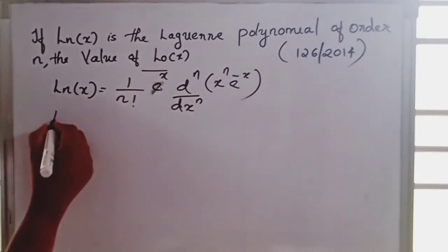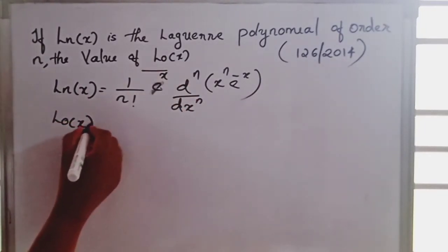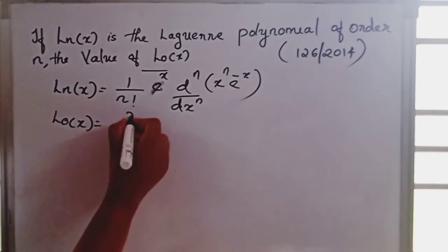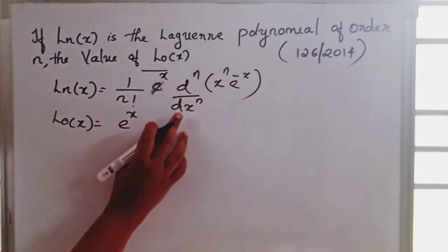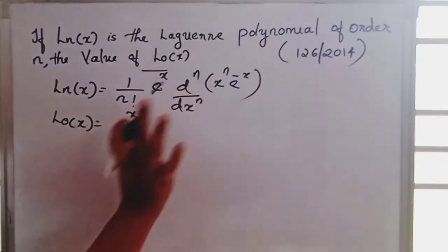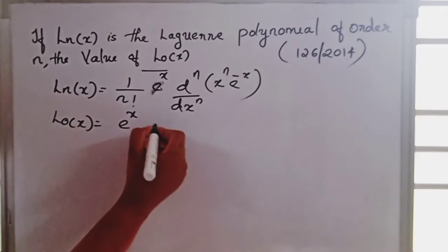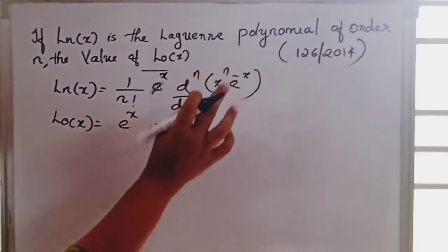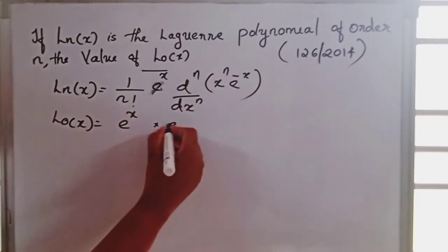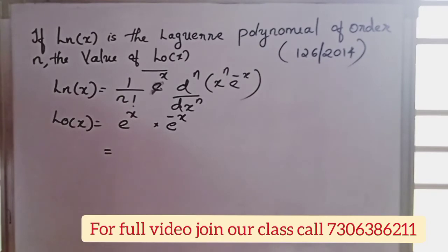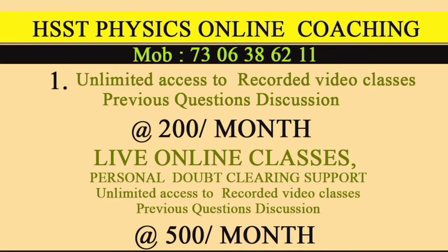We have to find the value of L_0(x). It is 1 by 0 factorial, e raised to x, d raised to 0 by dx raised to 0 — meaning the derivative will be into x raised to 0, since n equals 0 and x raised to 0, into e raised to minus x. e raised to x into e raised to minus x equals 1. The value of L_0(x) is equal to 1.